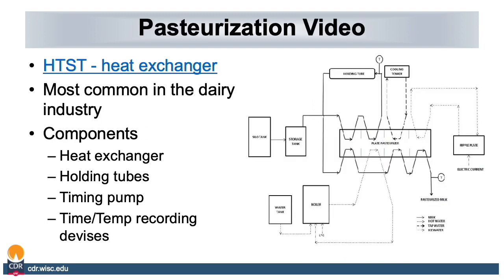The next method of pasteurization we're going to cover is high temperature short time, or HTST pasteurization. This is the most common in the dairy industry and the components of this pasteurizer include a heat exchanger, holding tubes, timing pump, and time and temperature recording device. From the diagram on the right of the screen, you can see how raw milk flows through the heat exchange system into the holding tubes and comes out as pasteurized milk. You can see where water is heated to heat the milk and how product is cooled prior to use. There is also a video in the video section of this short course where you can watch actual pasteurization occur in a virtual model.